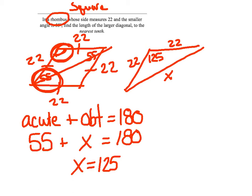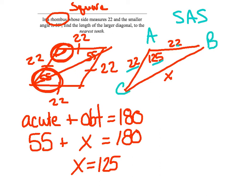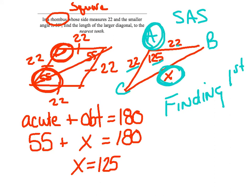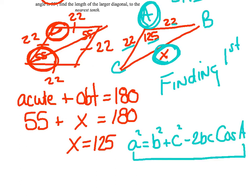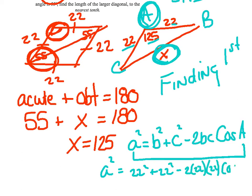Ask yourself: do I have law of sines or law of cosines? If you have opposites, you're sines. I have this angle and the side opposite, so I'm leaning toward sines — but I have this side and don't know this angle, and this side and don't know this angle. So it can't be sines. You have side, angle, side — which is law of cosines. I'm going to throw some letters on here: A, B, C. Finding comes first — I'm finding the side across from A. A squared equals B squared plus C squared minus 2BC cosine A. Plug and chug: 22 squared plus 22 squared minus 2 times 22 times 22 times cosine of 125.